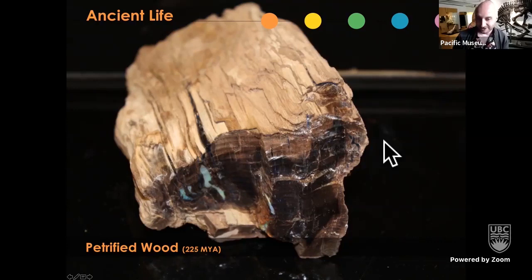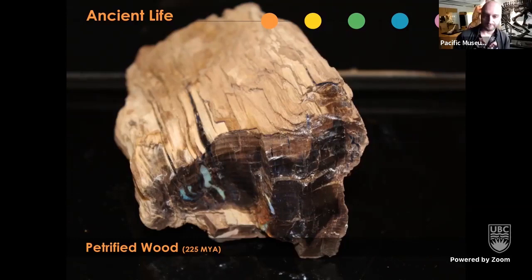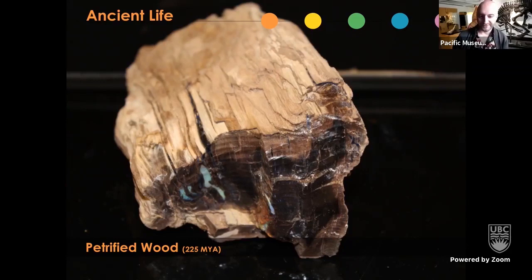We often think fossilization takes millions and millions of years, but it really often takes much less. Think of a petrified leaf or a petrified jellyfish — if those took millions of years to fossilize they would decompose first. The process of petrification often occurs over a few months or years. Opal is an amazing mineral for petrification because it's carried through water very easily, and so it can make really beautiful fossils like this one.